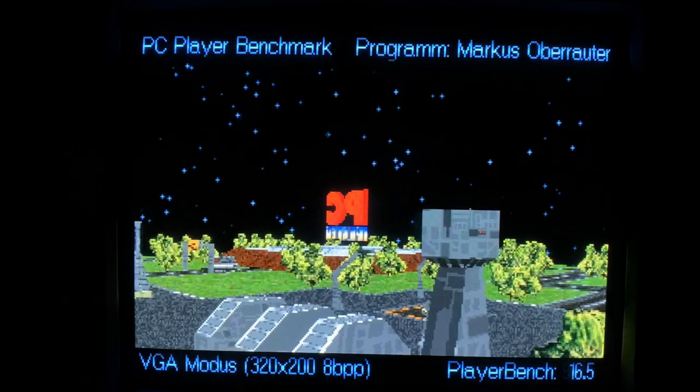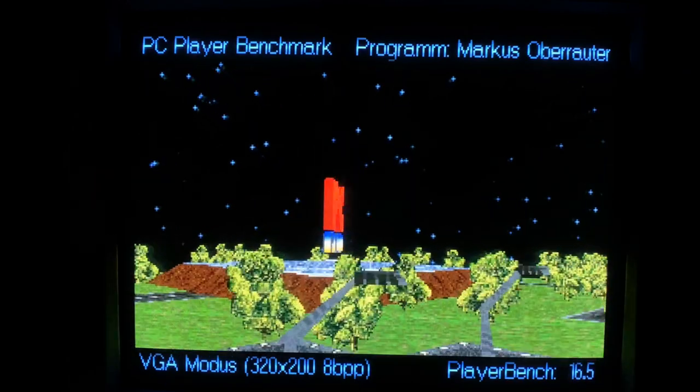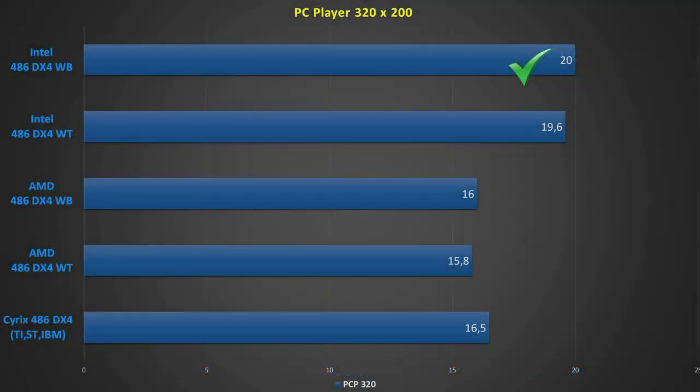PC Player is always a nice way to challenge an old setup. The results are interesting: Intel with write-back cache leads with 20 FPS, closely followed by the second Intel DX4. Surprisingly, the Cyrix CPU handles this benchmark much better than 3DBench and takes third place. AMD lost the PC Player benchmark.